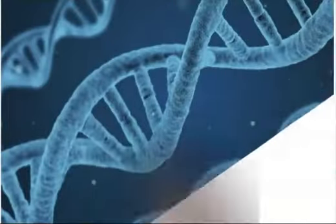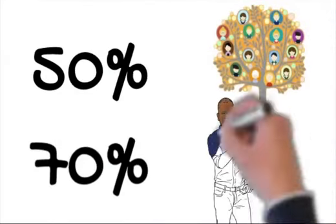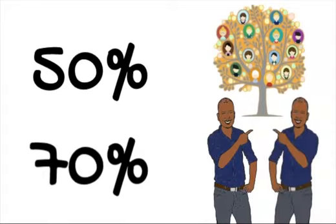Unlike aphasia, dyslexia has a strong genetic basis. 50% of dyslexics have a close relative with the disorder, and identical twins share it up to 70% of the time.